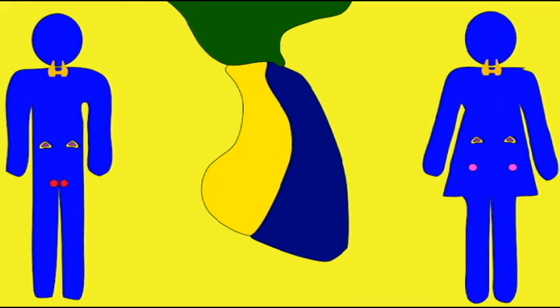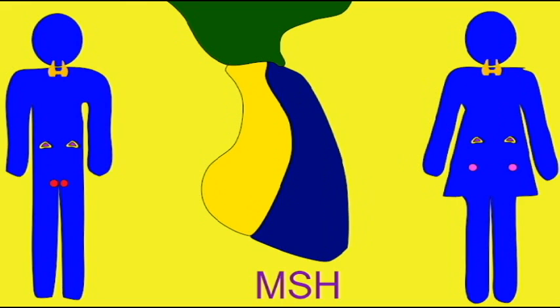The anterior pituitary secretes MSH, the melanocyte stimulating hormone, named for its ability to stimulate melanin production in melanocytes. This hormone also has a number of other roles and is very important in the regulation of diet, hunger, and the amount of adipose stored in the body.